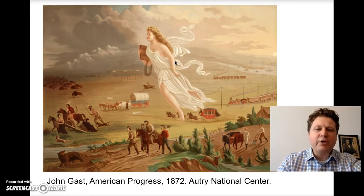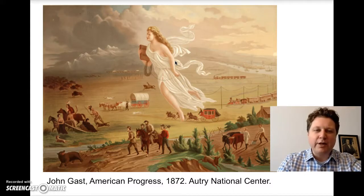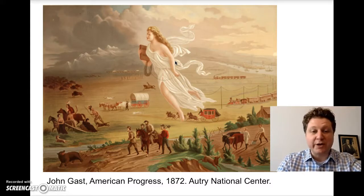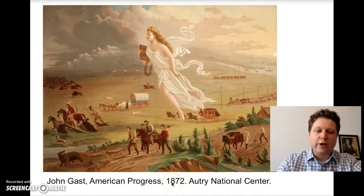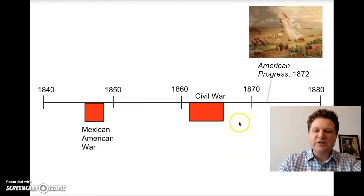But you can also ask students to point out what's missing in this painting. What's most glaringly absent is the rest of American diversity. For example, since this painting was made in 1872, freed African-American former slaves should also be moving westward, because this painting was a product of the Reconstruction era.